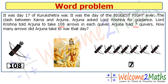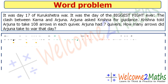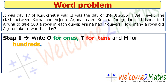The other two numbers are 108 — the number of arrows — and 7 — the number of quivers. So we solve it with these two numbers. Step one: we write the place value columns. Since one number is a three-digit number, we write O for ones, T for tens, and H for hundreds.